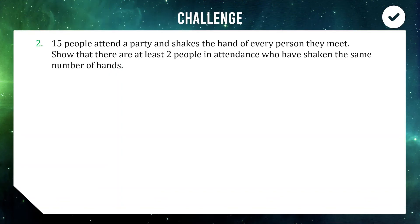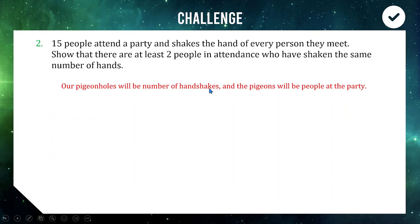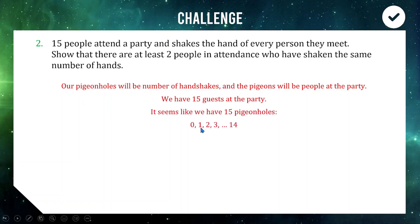Last challenge question: 15 people are at a party and each shakes the hand of every person they meet. Show that at least two people have shaken the same number of hands. Our pigeonholes are the number of handshakes (a categorization), and our pigeons are the 15 people. It looks like we have 15 pigeonholes — you could shake zero hands, one hand, two hands, up to 14 hands (you can't shake your own). So we seem to have a one-to-one match with 15 guests and 15 pigeonholes.